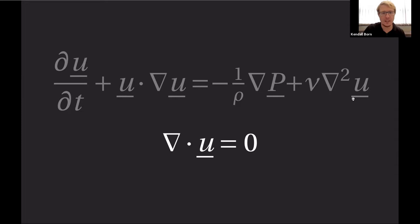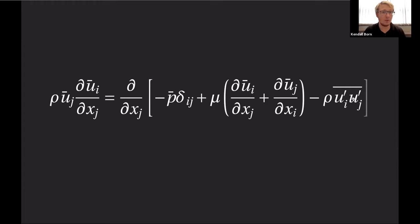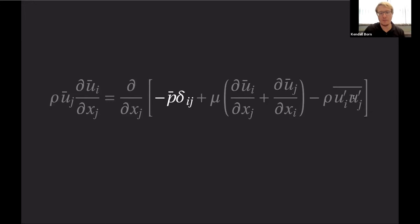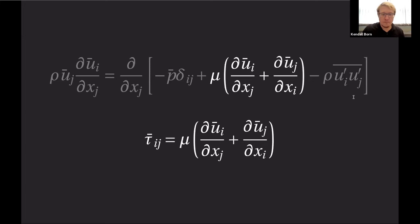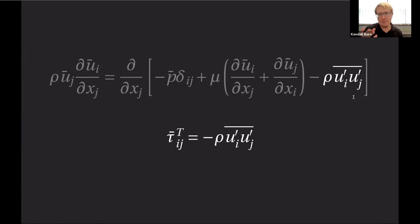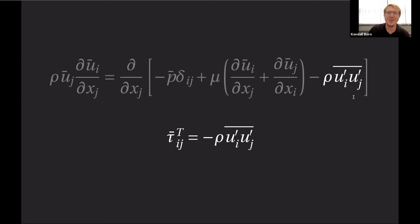We take this Reynolds decomposition and substitute it into the Navier-Stokes to get what's called the Reynolds-Averaged Navier-Stokes equation. This is basically the same as Navier-Stokes — we still have isotropic stresses from pressure and viscous stresses — but then the Reynolds stresses appear. These are unknown; they still need to be determined. This is the closure problem: we end up with more unknowns than equations, so we need to model these unknown Reynolds stresses to close the system.